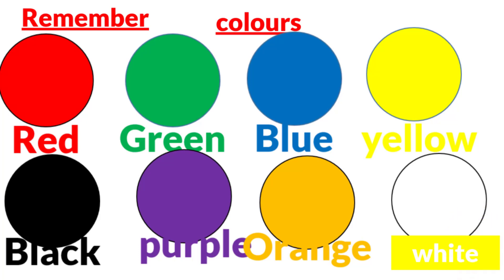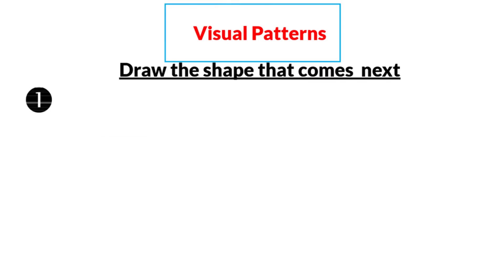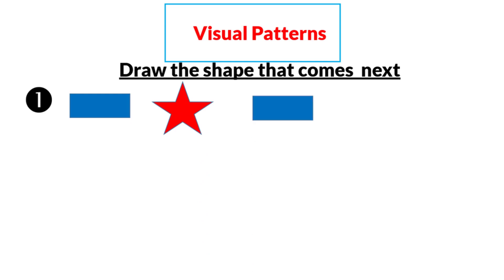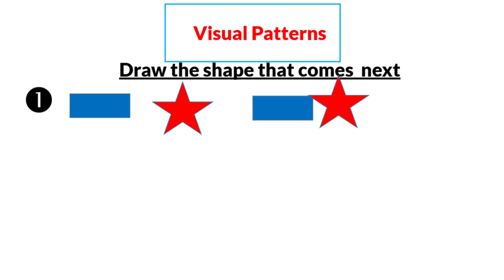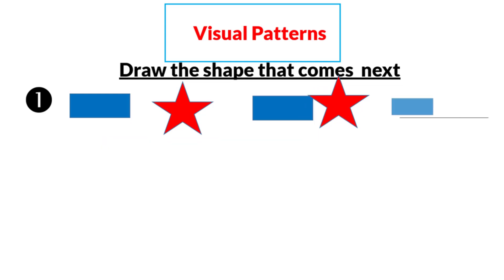Next: visual patterns — draw the shape that comes next. Number one guys, we have: rectangle, star, rectangle. What is the next shape? Again: rectangle, star, rectangle, star. So rectangle-star is the repeating pattern.